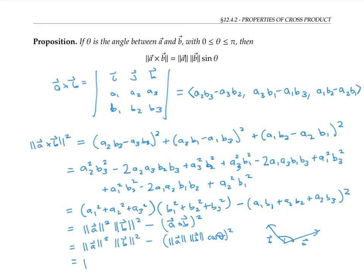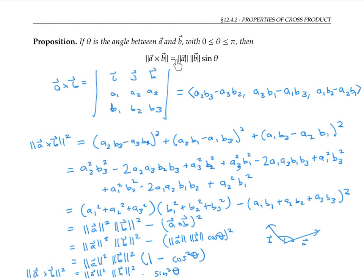And now I'm going to factor out the length of A squared times the length of B squared from each of my two terms. So that gives me 1 minus cosine² θ. Notice that it's no problem to factor out the length of A squared times the length of B squared from this term, since the whole thing is squared. Finally, 1 minus cos² θ is the same thing as sin² θ. The equation we want follows directly by taking the square root of both sides, provided that sine of θ is positive, which it will be if θ is between 0 and π. And that completes the proof of the length formula.